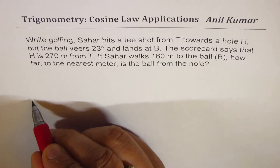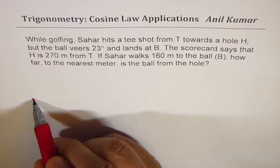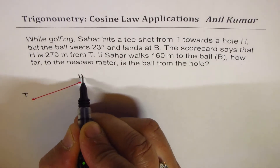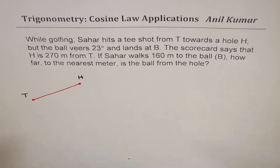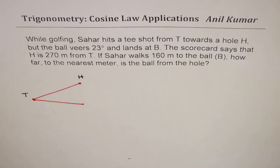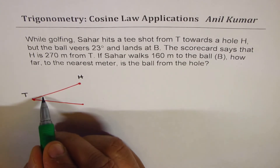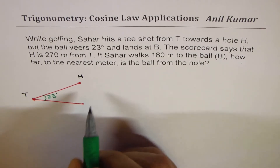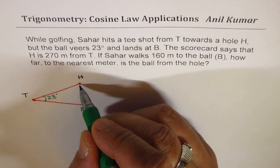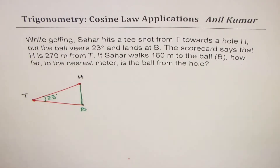Let's sketch the diagram. Let's say this was the point T from where the ball was hit and that was the hole H. The ball veers by 23 degrees — so that is 23 degrees — and we'll call this point B where the ball now lies. We need to find the distance between B and H. That's what we need to find.